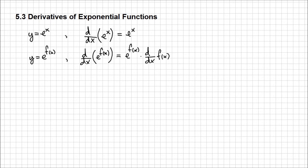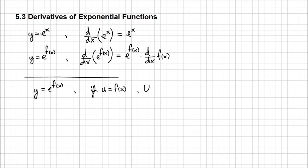Let's see how we actually demonstrate this formula using the chain rule. So this function y equals e^f(x) — let's replace f(x) with something simpler, such as u. So if u is f(x), then we can rewrite y to be equal to e^u. Now if we differentiate y with respect to u, dy/du is going to be equal to e^u, because it's with respect to u, not x.